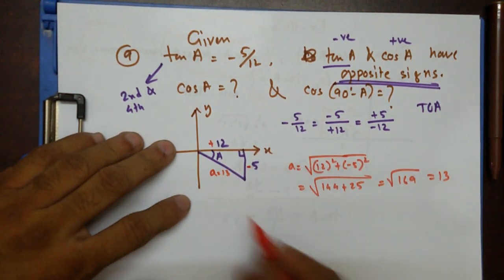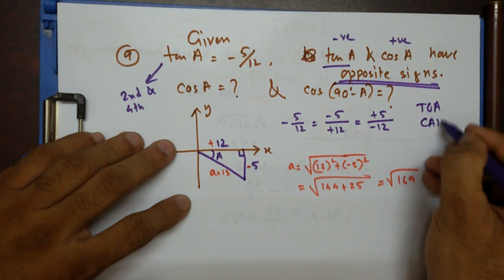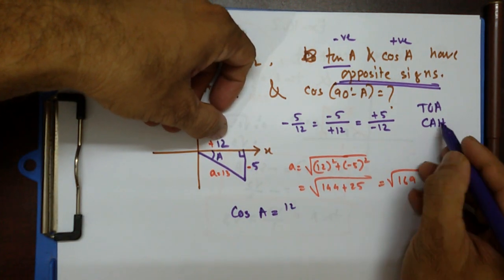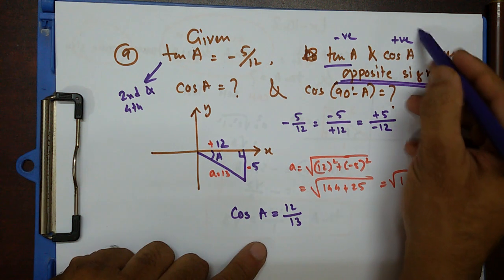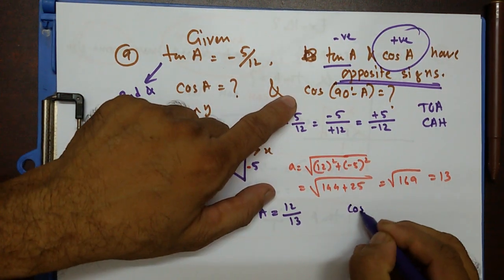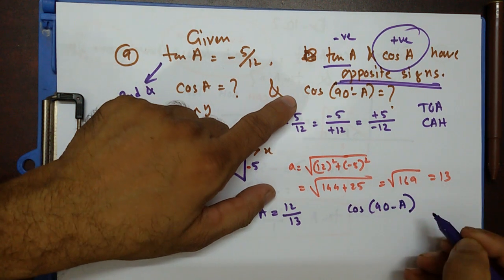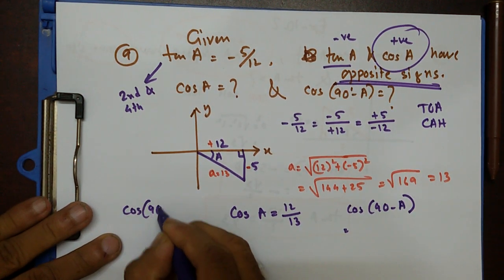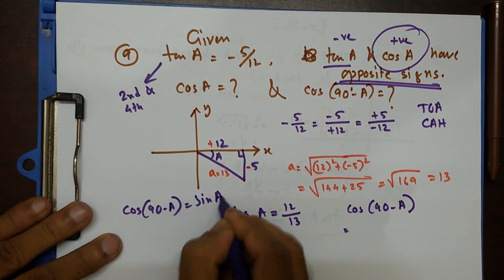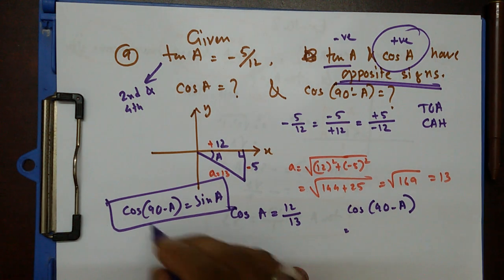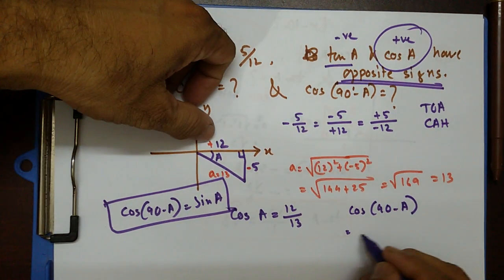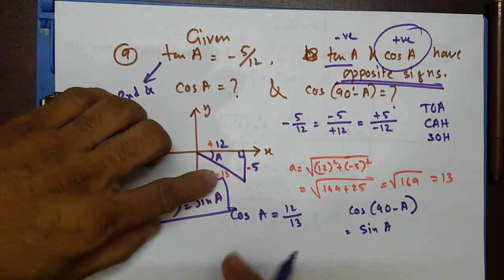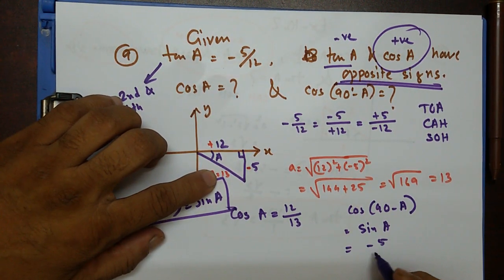Now cos a equals adjacent over hypotenuse, so that's twelve over thirteen. Remember, cos is positive in the fourth quadrant, which checks out. For cos(90° − a), using complementary angle identity, cos(90° − a) equals sine a. Sine a is opposite over hypotenuse, which is negative five over thirteen.